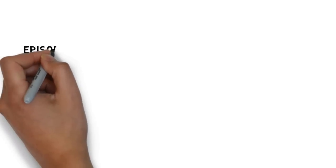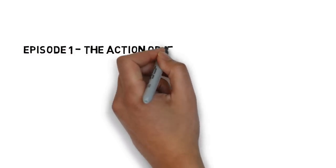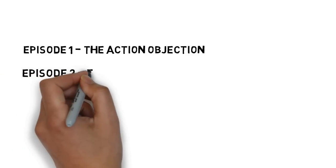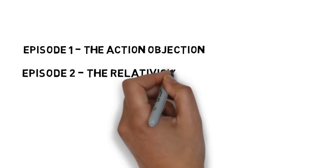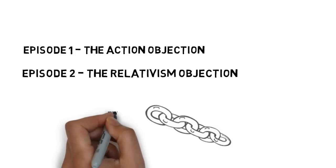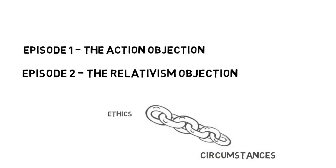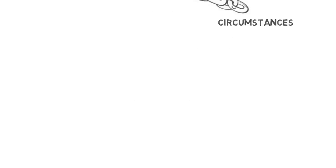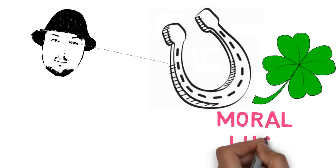In the first episode I answered the criticism that notions of virtue cannot tell us what we ought to do. In the previous episode I answered the accusation that virtue ethics suffers from crippling relativism, but it's so tied to the particulars of one's circumstances as to being incapable of offering universal moral instruction. In this episode I'm looking at the so-called moral luck objection.